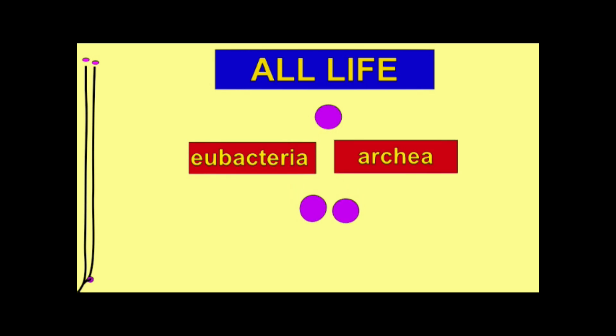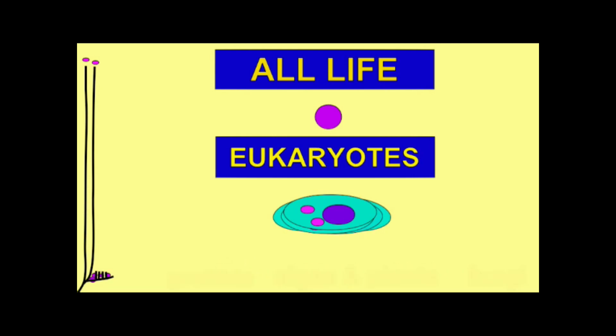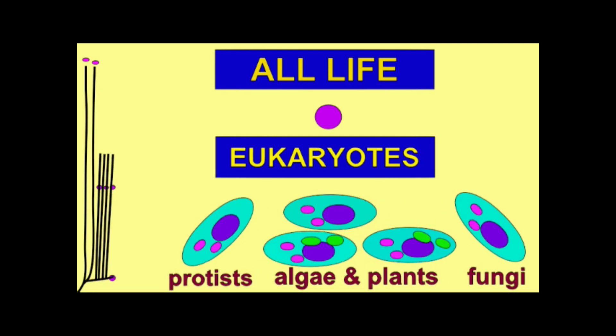One of the main events in the origin of the first eukaryotic cells was that of endosymbiosis, where cells from one of the domains of life began to live inside the cells from the other domain of life. Thus, eukaryotic cells — the ancestors of protists, plants, fungi, and animals — are chimeras, having inherited genes and traits from both of these separate domains of life: eubacteria and archaea.